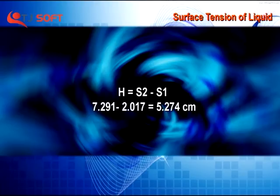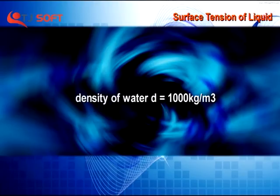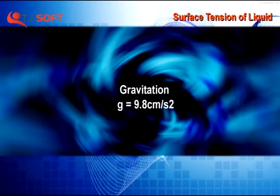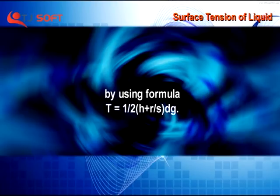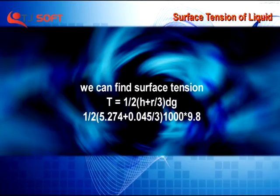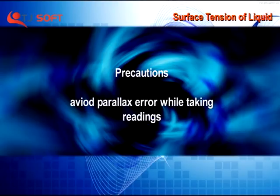H is equal to S2 minus S1. Using the density of water and gravitational acceleration, and applying the formula, we can find the surface tension of water. Precaution: avoid parallax errors while taking readings.